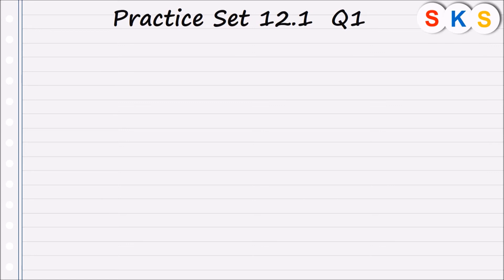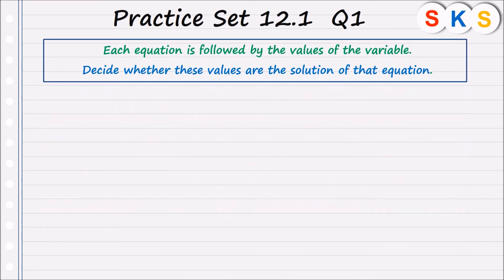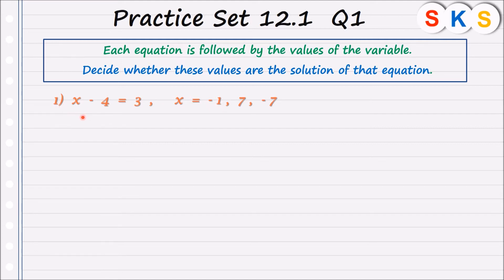Practice set 12.1, question number 1. Each equation is followed by values of the variable. Decide whether these values are the solution of that equation. The first question is x minus 4 equals to 3, with given values x equals to minus 1, x equals to 7, and x equals to minus 7. Note that x minus 4 is the left hand side of the equation, and 3 is the right hand side.